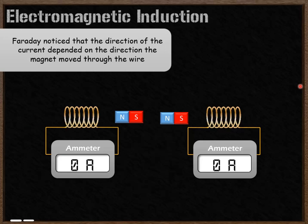Faraday also noticed that the direction of the current depended on the direction the magnet moved through the coil of wire. In this first example, we're starting with the north pole moving through in this direction. Watch what happens to the current flowing through the wire.